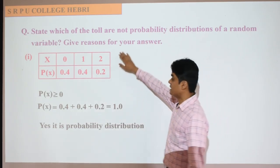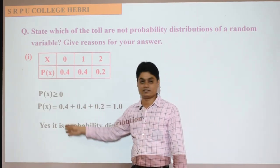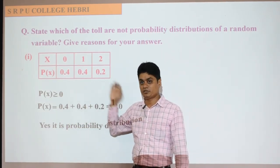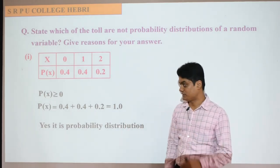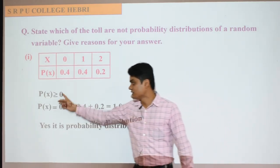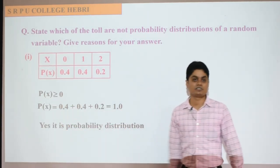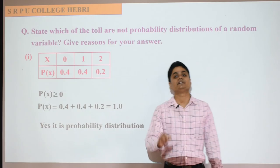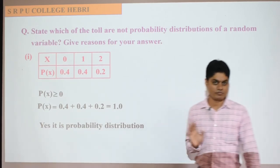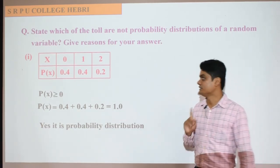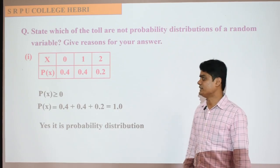They ask to give a reason. Write these two reasons — that all entries are non-negative and less than one, and the sum equals one — and write the conclusion that it is a probability distribution. One more question follows.